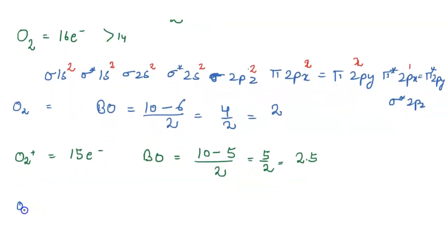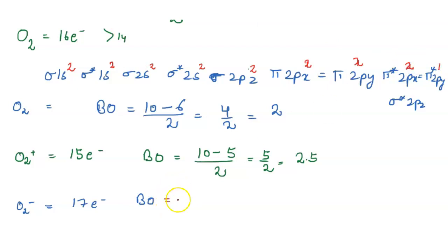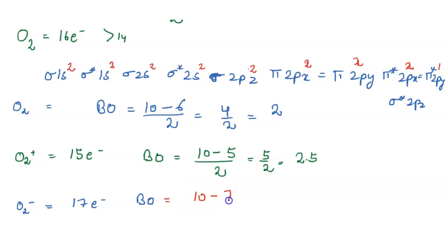Next, O2 negative. O2 negative gains 1 electron, so it has 17 electrons. The bonding electrons are 10, and the anti-bonding electrons are 7. So bond order equals 10 minus 7 divided by 2, which equals 3 upon 2, which equals 1.5.